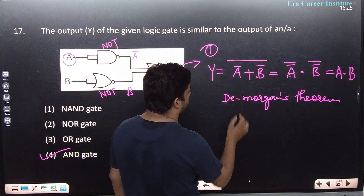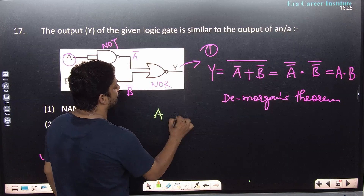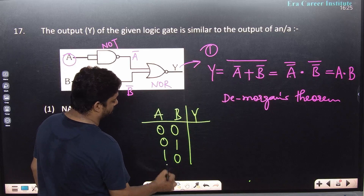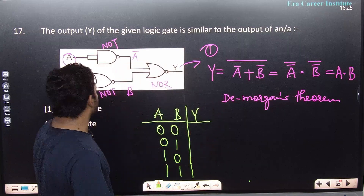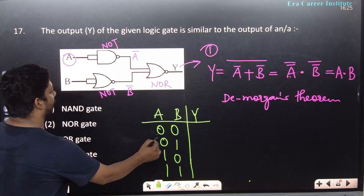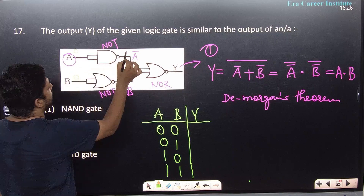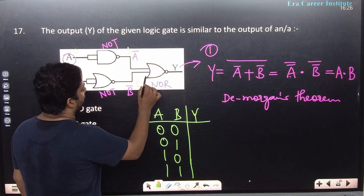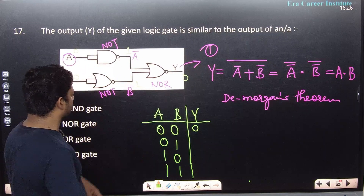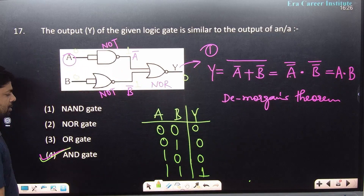Some students find De Morgan's difficult. An alternative method is to write the truth table directly. With two inputs, there are 4 combinations. Checking each case through the circuit: input (0,0) → outputs (1,1) to NOR → 0; checking all four rows gives outputs 0,0,0,1 — which matches an AND gate truth table.